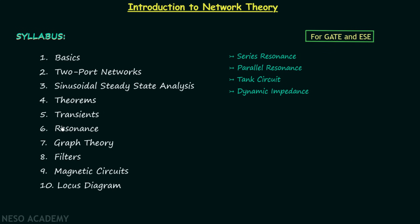Chapter number 6 is Resonance. We will first talk about series resonance, quality factor, and bandwidth. Then we will talk about parallel resonance, tank circuit, and finally what we mean by dynamic impedance.